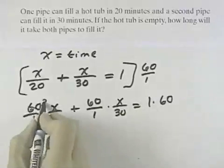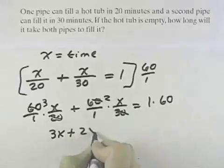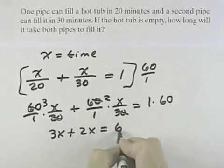So the 20 and the 60 cancel leaving 3, we have 3X, plus the 30 and the 60 cancel leaving 2, for 2X, equals 1 times 60, which is 60.